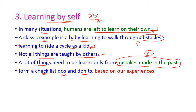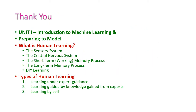So far we have seen what is human learning — how humans learn things from their environment — covering the sensory system, central nervous system, short-term memory process, long-term memory process, and DIY learning. We also covered the three types of human learning: learning under expert guidance, learning guided by knowledge gained from experts, and learning by self. In the next class we will see another important topic from the first unit. Thank you.